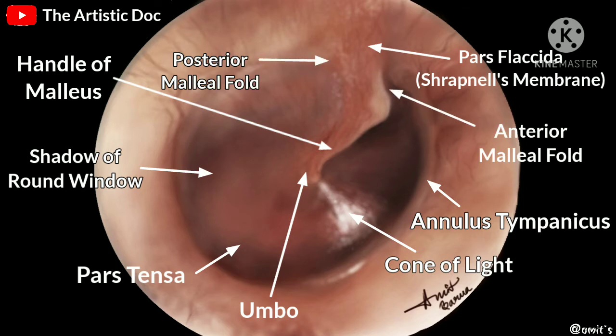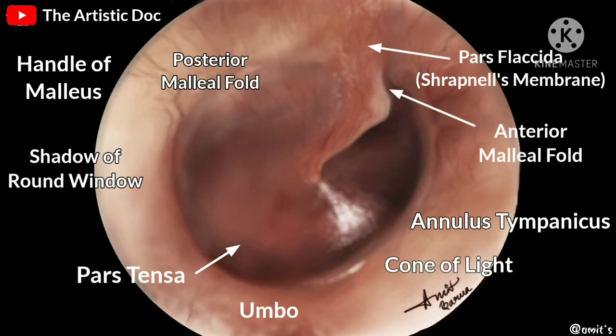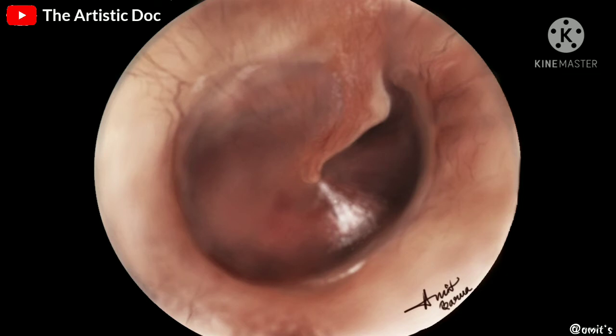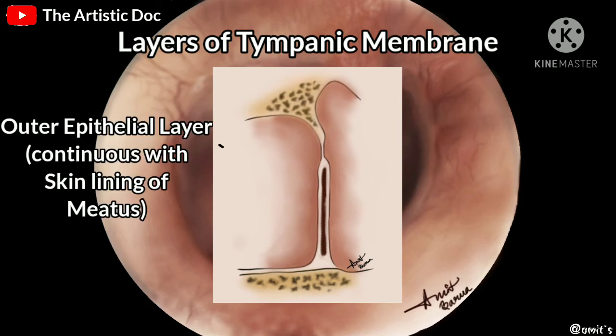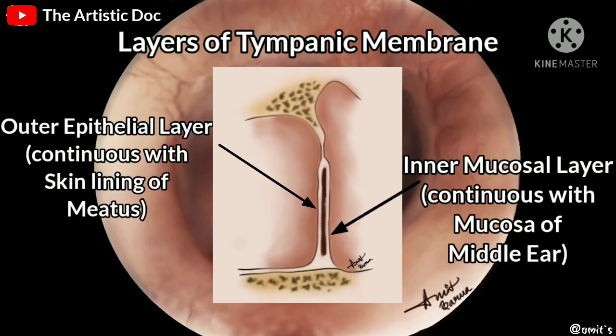Appreciate the anterior and posterior malleolar folds. Now, looking at the layers of the membrane: the tympanic membrane consists of three layers — the outer epithelial layer, the inner mucosal layer, and the middle fibrous layer.